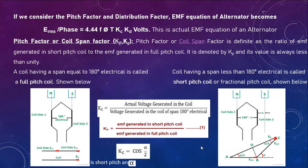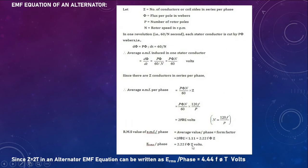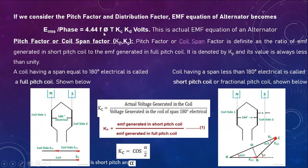Two additional factors are introduced: pitch factor (Kc) and distribution factor (Kd). Considering these, the EMF equation of the alternator becomes: E_rms per phase = 4.44 × f × φ × T × Kc × Kd, where Z = 2T and T is the number of turns per phase. Kc is the pitch factor and Kd is the distribution factor.